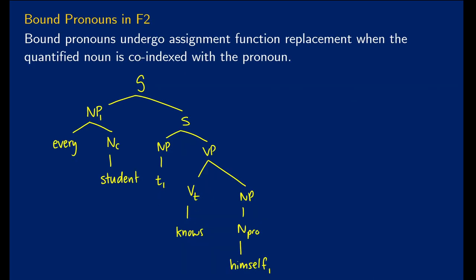Now with bound pronouns, we're going to have something a little bit different. So let's just go up to the very first sentence. So this noun phrase at the bottom right here with himself is just going to be G of himself₁. So we index it with one because it's going to correspond to every student. Every student knows himself, meaning that each individual student knows who they are, they themselves are.